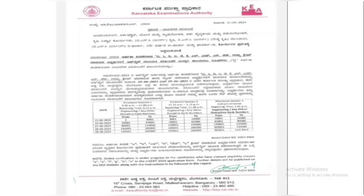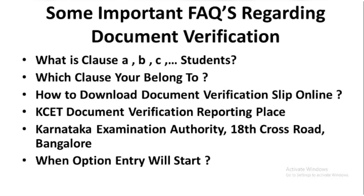Some important FAQs regarding document verification: What is Class A, B, C? If you belong to Class A, no need to do document verification offline — it has been done online. You will receive an online document verification slip, and with that you can start your option entry. Class B to Z students have to do document verification offline. If your name is in that list, you belong to Class B to Z and you have to go to the office and complete your document verification.